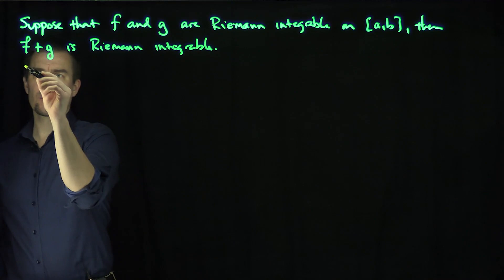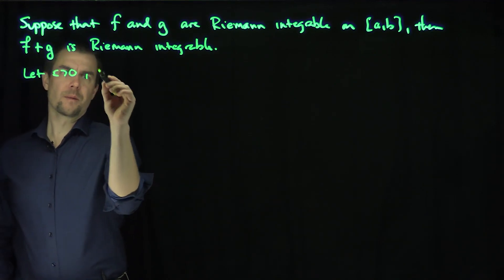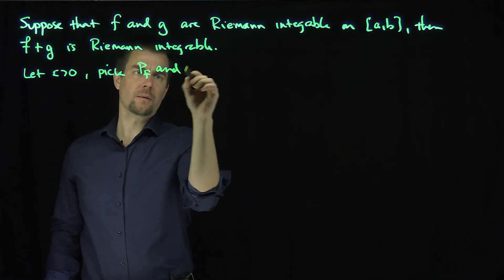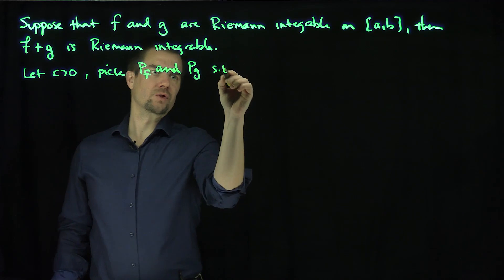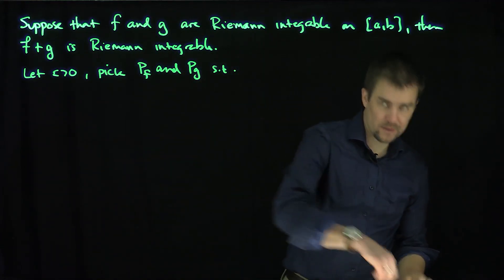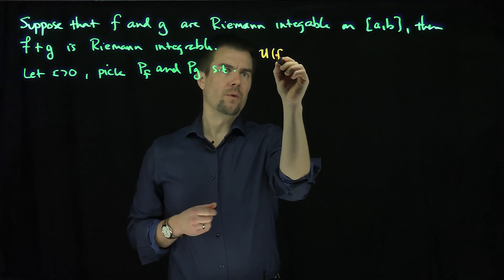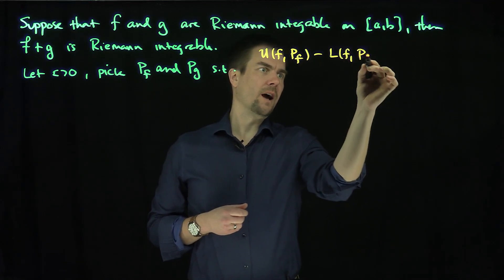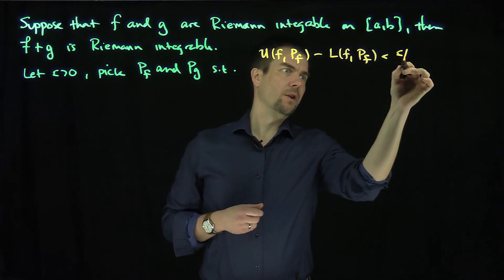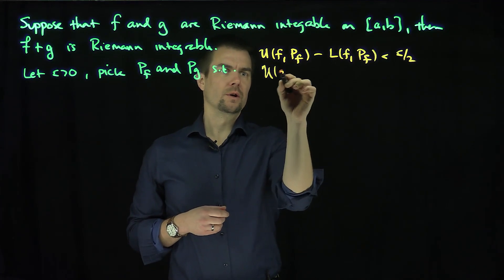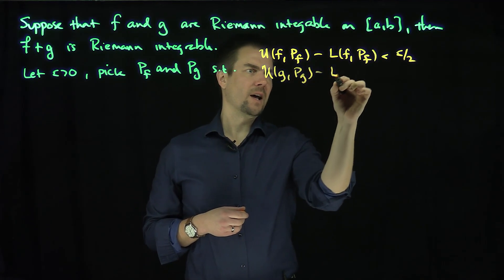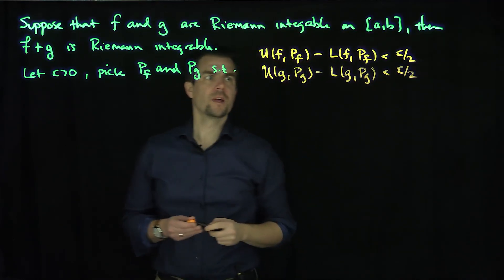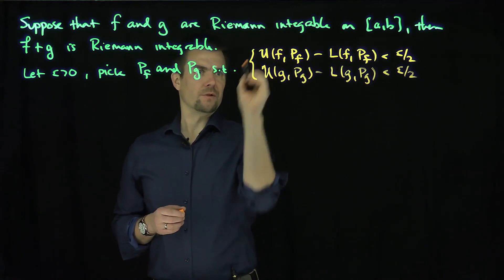Let's prove this. Let epsilon be greater than zero and pick partitions pf and pg such that two things are true: U(f, pf) minus L(f, pf) is less than epsilon over 2, and U(g, pg) minus L(g, pg) is less than epsilon over 2. We can do this because f and g are both integrable.